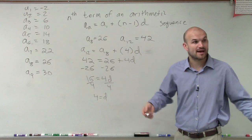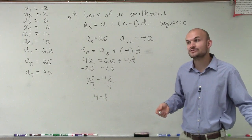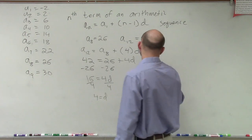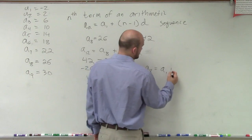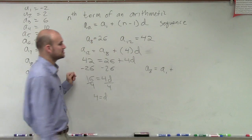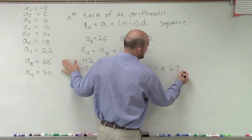Now to find a sub 1, we can plug that back in. We can plug the information back into our formula. So if I know a sub 8 is equal to a sub 1 plus, well, the difference from going from 8 to 1 is now going to be 7d.